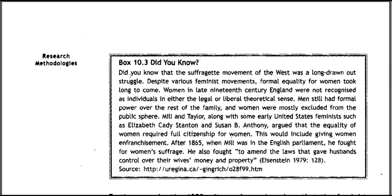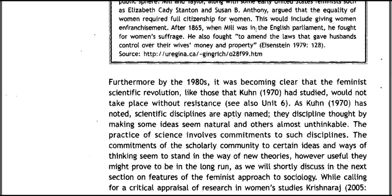The suffragette movement of the West was a long drawn-out struggle. Despite various feminist movements, formal equality for women took long to come. Women in late 19th century England were not recognized as individuals in either the legal or liberal theoretical sense. Men still had formal power over the rest of the family and women were mostly excluded from the public sphere. Mill and Taylor, along with early US feminists such as Elizabeth Cady Stanton and Susan B. Anthony, argued that equality of women required full citizenship, including enfranchisement. After 1865, when Mill was in the English Parliament, he fought for women's suffrage and to amend laws giving husbands control over their wives' money and property.